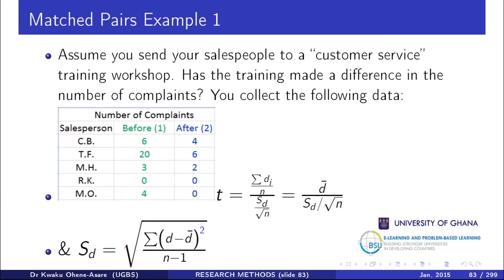Looking at the data: CB had 6 complaints before and 4 after; TF had 20 before and 6 after; MO had 4 before and 0 after. You would expect that after training, the number of complaints will reduce. If complaints are smaller after training, the person benefited from the exercise.